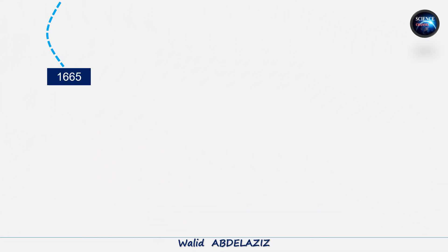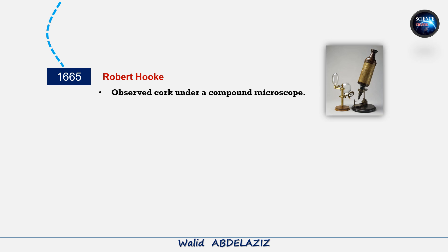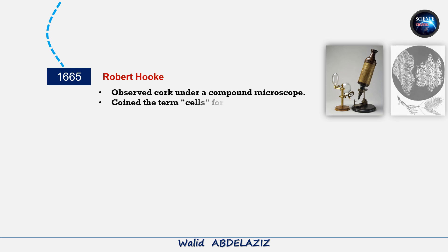The discovery of cells began in 1665, when Robert Hooke examined thin slices of cork under a compound microscope. He noticed tiny box-like structures and named them cells because they resembled small rooms.